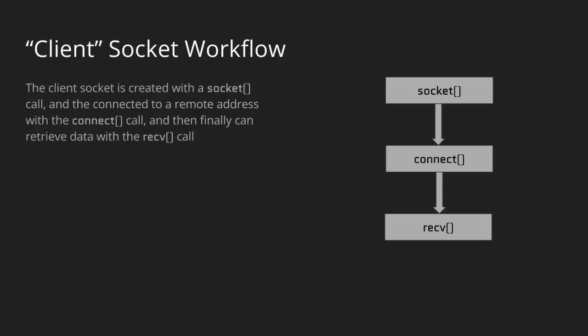After the socket is created, we need to connect it to some remote address — that's where we specify the IP and port. If the connection is successful, you get back a return value indicating success, and then you can start sending and receiving data. For our client, we'll just receive here, since something else will be sending data. Like if you were writing an HTTP client, you might send a request first and then receive data back as a response. The receive function lets us get data back, read it into a string, print it out, store it, or write it to a file.